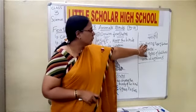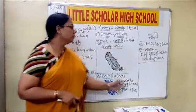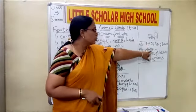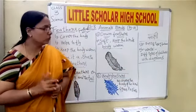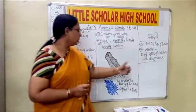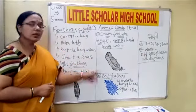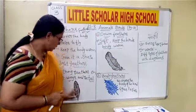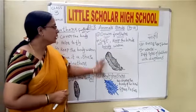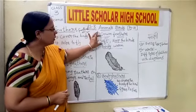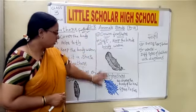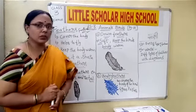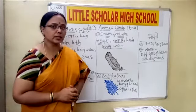We shall stop here and move to the next topic in the next class. Today I explained the different types of feathers — it is a very small topic. For your homework, write all the different types of feathers with the given diagrams. Write the names, how they are, what their importance is, and please write the answers supporting with a diagram. We shall move to the next topic in the next class. Thank you.